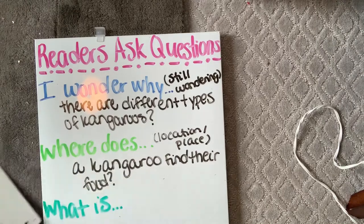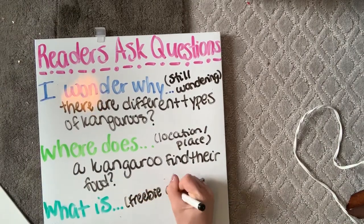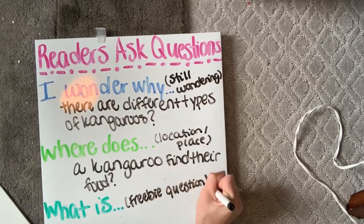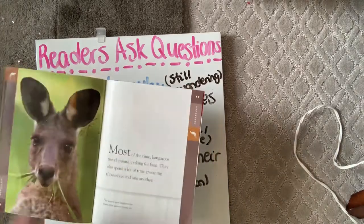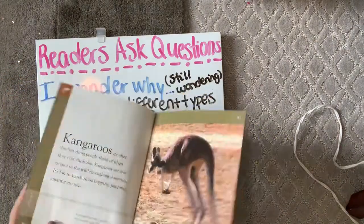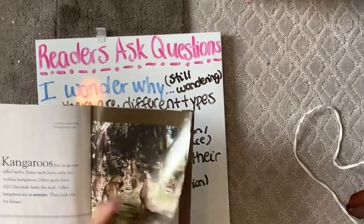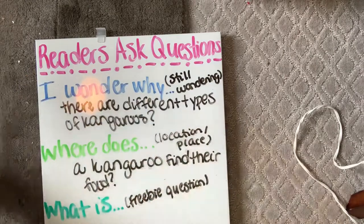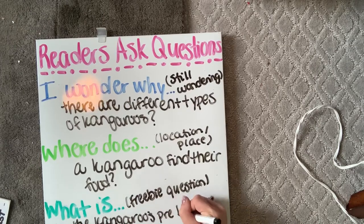And finally, 'What is' — I'm going to call this the freebie question. This is something you can ask after you've read a nonfiction book that the text simply didn't answer for you, that you still want to know about — something they just completely didn't talk about in the book. I know they talked about looking out for danger, but what is the predator of a kangaroo? They didn't really talk about that. So I'll write: 'What is the kangaroo's predator?'